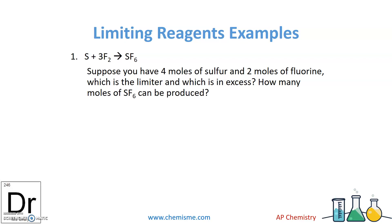Now we're going to do the same thing for a chemical reaction. In this reaction, one sulfur reacts with three fluorines to make SF6. We have four sulfurs on hand and two fluorines, and we want to know which one limits us and how much we'll actually make. Looking at just the sulfur: I need one sulfur to make SF6, and I have four, so I can make four SF6 molecules.